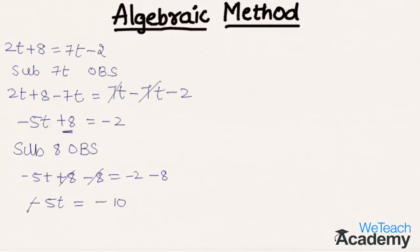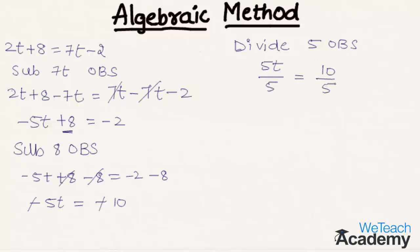Here, minus and minus get cancelled on both sides. Now to make the coefficient of variable t equal to 1, let us divide the equation by 5 on both sides. By dividing, we get 5t divided by 5 equal to 10 divided by 5. On the left hand side, 5 and 5 get cancelled. On the right hand side, 10 divided by 5 is 2, and we get the value of t as 2.